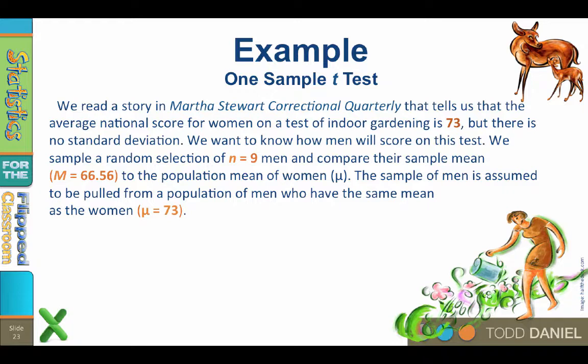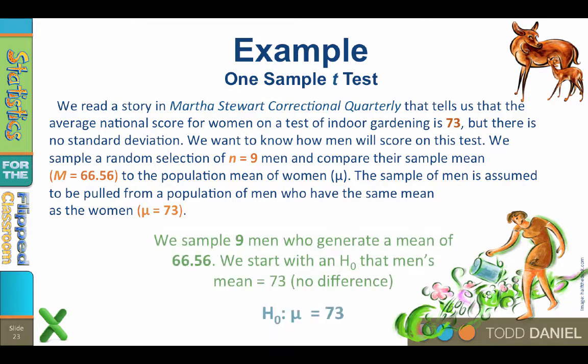We will compare the men's sample mean to the average score for the women. We sample a random selection of 9 men, who produce a mean of 66.56. So either we have about 8 points of sampling error, because there's approximately 8 points of difference between the two means, or the mean of men is significantly different than the mean of women — i.e., the mean of the population of men does not equal 73.